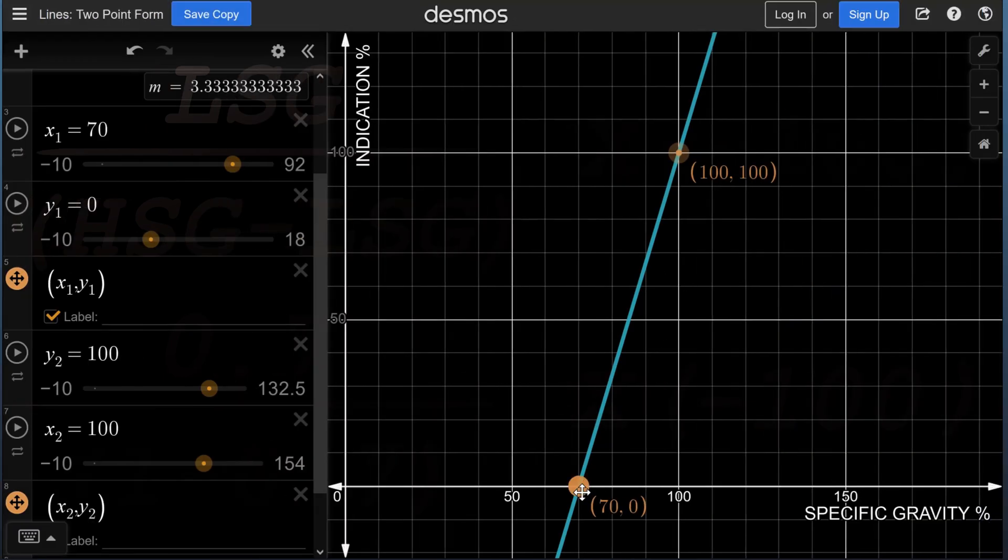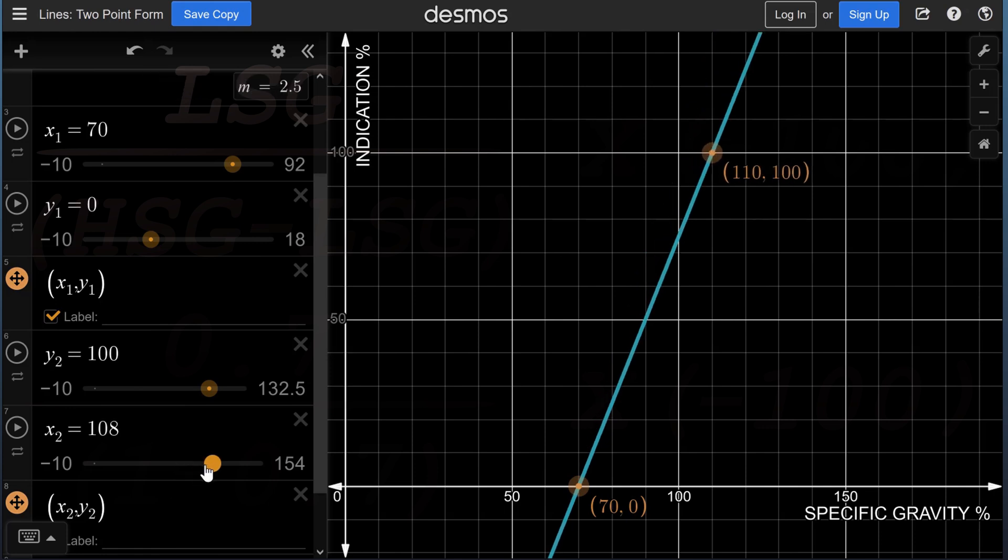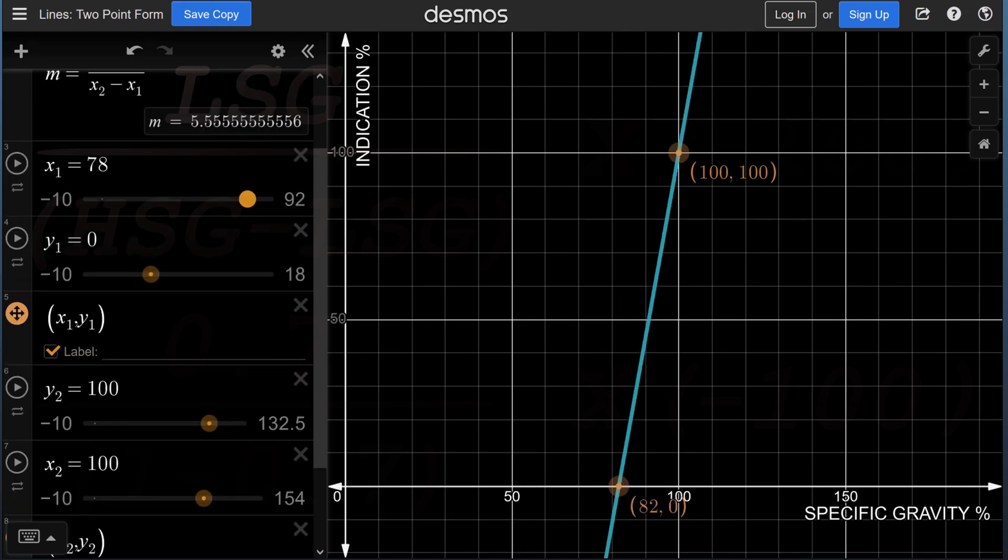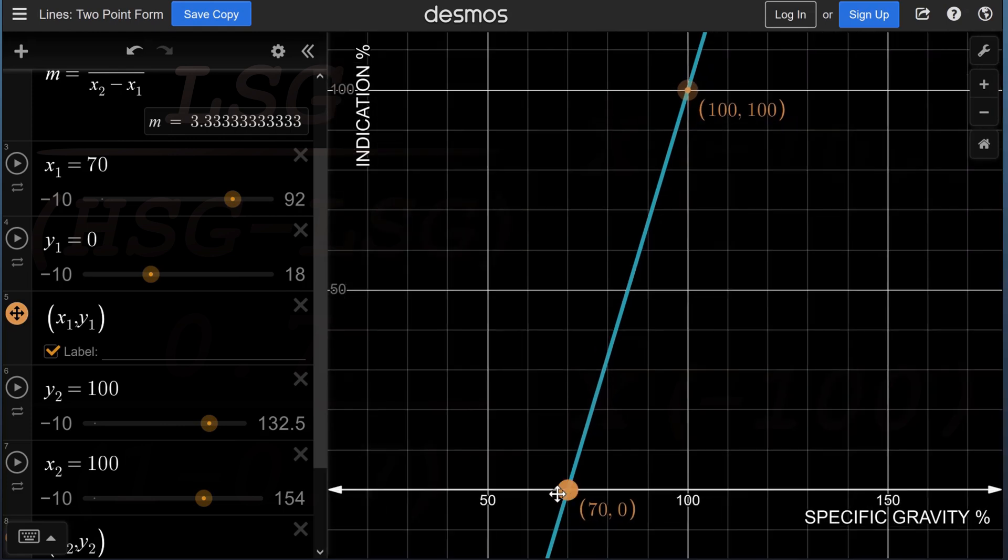We will open the graphic calculator Desmos and from the options, select the lines in two points form. X2 is the value of the point in the X-axis and represents the specific gravity and percentage of the heavier liquid. X1 represents the specific gravity and percentage of the lighter liquid.